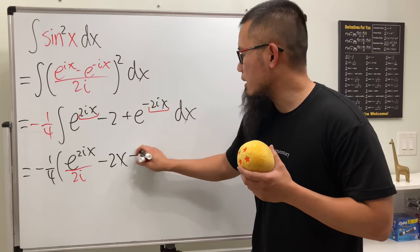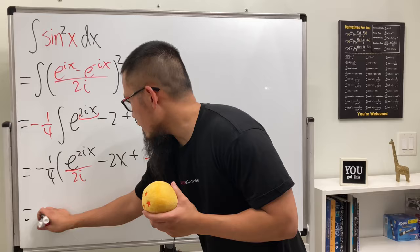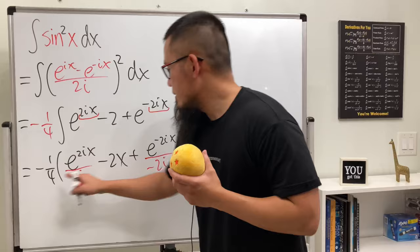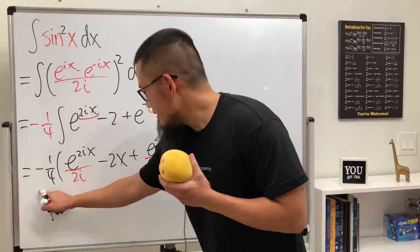We'll have plus, and then we get e to the negative 2xi, but divided by negative 2i, like so. And as you can see, this time the result is going to be positive 1 over 4.